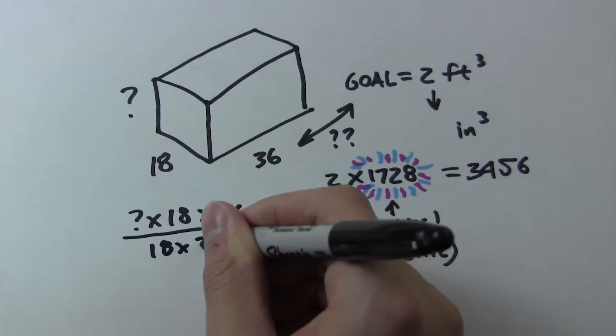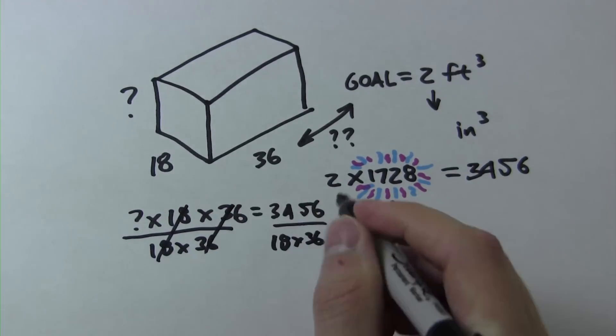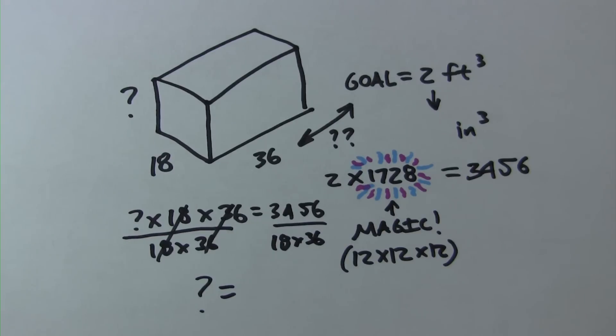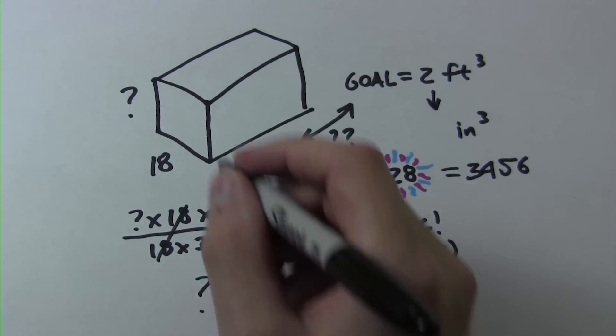We can now use simple algebra and divide 3,456 by 18 and then divide by 36 to find that variable height, which ends up being 5.3 inches.